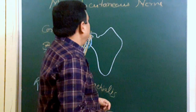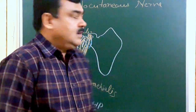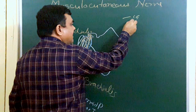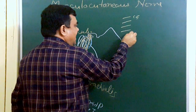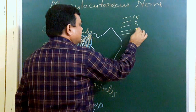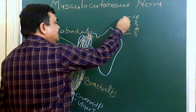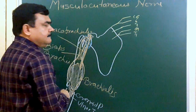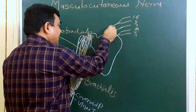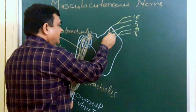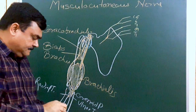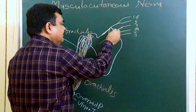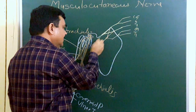Before going into detail of the musculocutaneous nerve, we will review the brachial plexus. Here are the roots: C5, C6, C7, C8, and T1. C5 and C6 join to form the upper trunk, this is the middle trunk, and this is the lower trunk. Then there is division — the three trunks divide posteriorly. The posterior divisions form the posterior cord, and the ventral divisions of the upper trunk and middle trunk join to form the lateral cord.